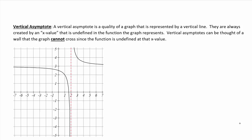Starting with vertical asymptotes, the key thing to understand about them is that they are a brick wall that the graph cannot cross. The graph peels up towards infinity at one end and down towards negative infinity at the other end, and that red dotted line is our asymptote. The reason it's a brick wall is because the function does not exist at that point. It is created by something that makes it so you cannot substitute in — in this case, two. So for example it might look something like one over x minus two. If I tried to sub in two I would get one over zero, which is undefined. So something like that can create a vertical asymptote — it's where the function does not exist.